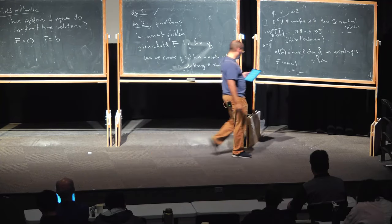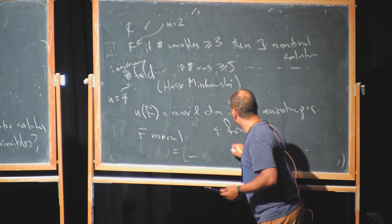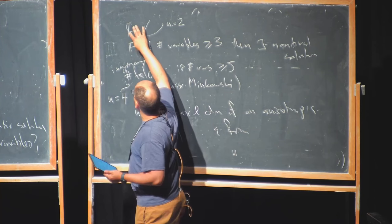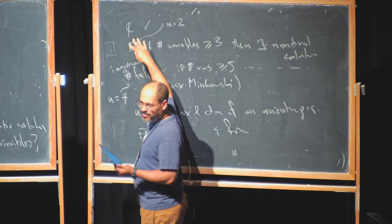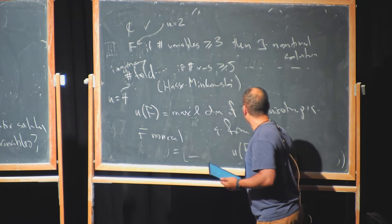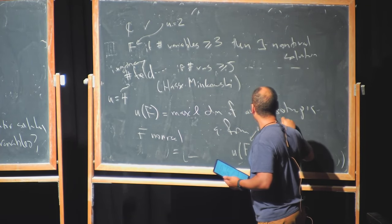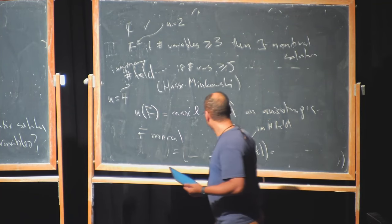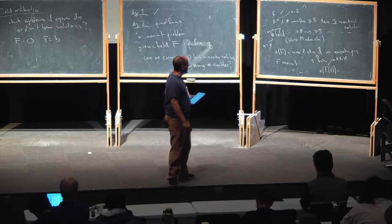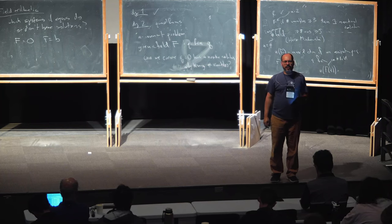We can try to keep going. For example, you might ask: what's the u-invariant of F(t), where F is an imaginary number field? If you have enough variables, are you going to have a non-trivial zero? What do you think? Any guesses for what the number is?